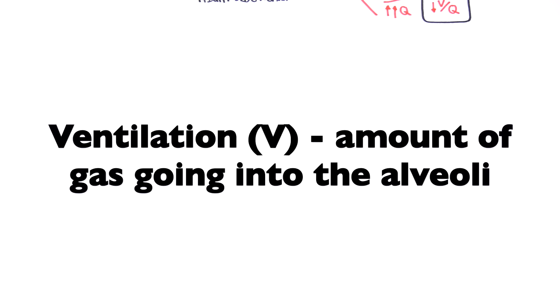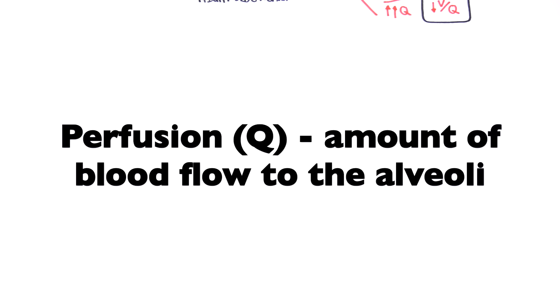Hello, in this video we're going to talk about pulmonary circulation and we will also talk about ventilation and perfusion. Ventilation is essentially the amount of air traveling into your alveoli ready for gas exchange. Perfusion is the amount of blood flow going into the alveoli and thus prepared for gas exchange as well. Ventilation is abbreviated V and perfusion is abbreviated Q.